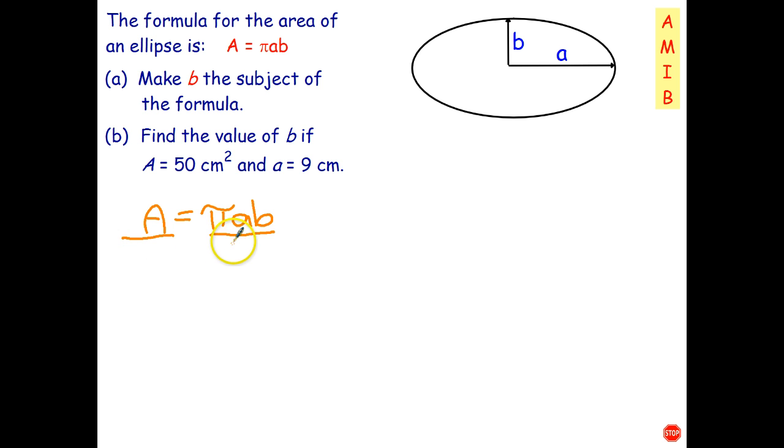So a better way to tackle this would be to say I've got b multiplied by pi a. So I'm going to divide both sides by pi a. Pi a divide pi a goes to 1. That leaves b by itself which is what we want and A over big A for area over pi times a.